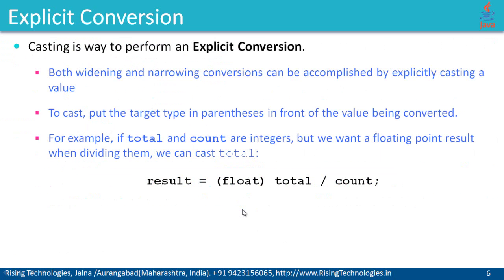To perform an explicit conversion, the way is casting. So casting is the way to perform an explicit conversion, and using casting we can perform both widening as well as narrowing conversions. To cast, put the target type in parentheses in front of the value being converted.